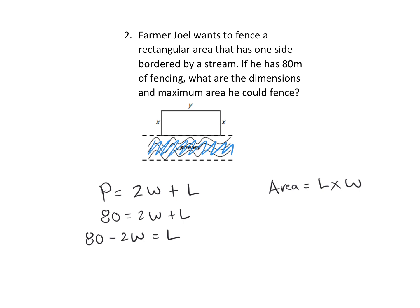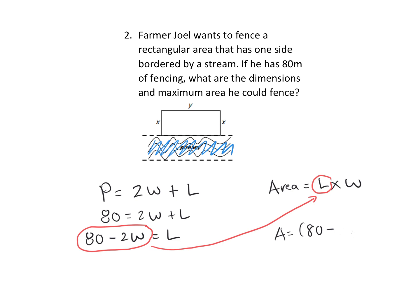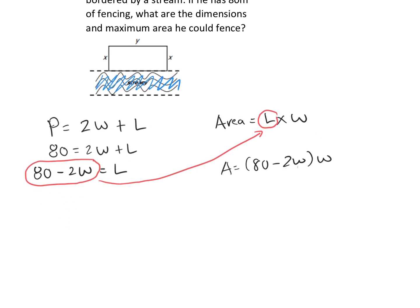We still want to maximize area — area is still length times width even though there's only fencing on three sides. We replace length with (80 minus 2W) since that's what equals length, so area equals (80 minus 2W) times W. Then we expand.